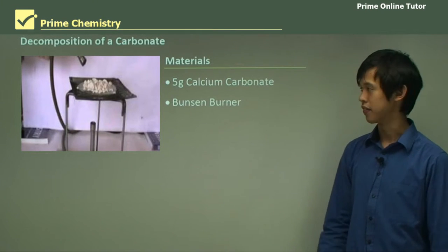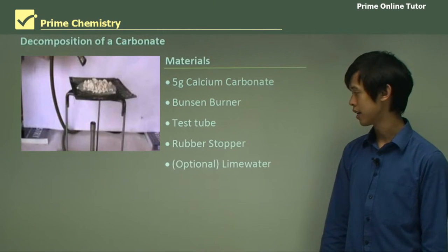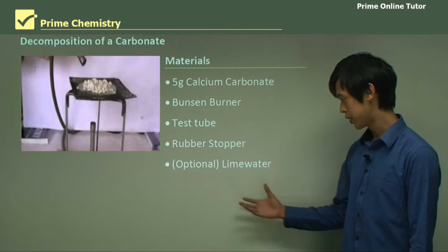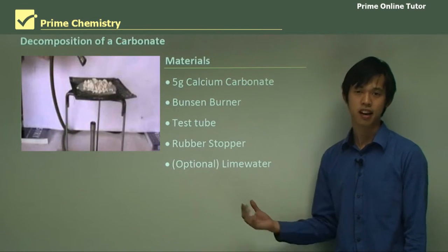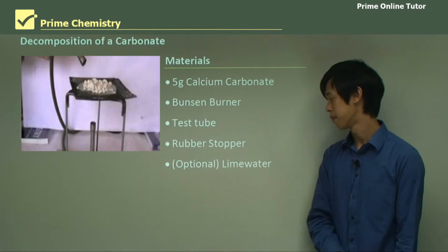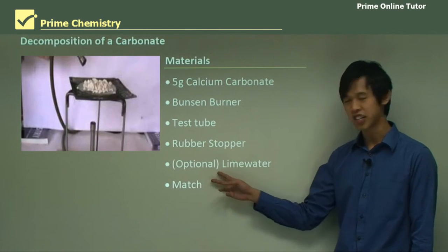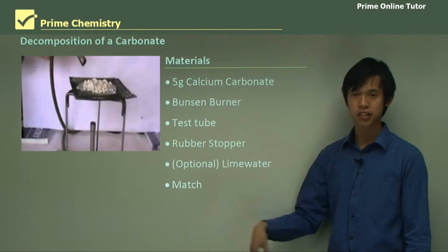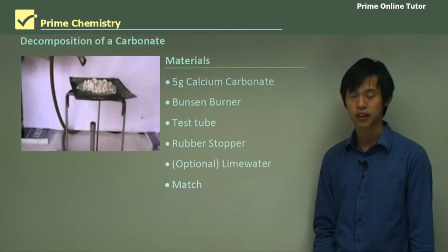Bunsen burner, obviously for the heat part of it. Test tube, rubber stopper, and optionally we could use lime water. We don't need this, but it's nice to have for the results part. We also need a match. You can interchange these two. If you have matches on hand, that's good. If you have lime water on hand, that's good also, so either one will be fine.